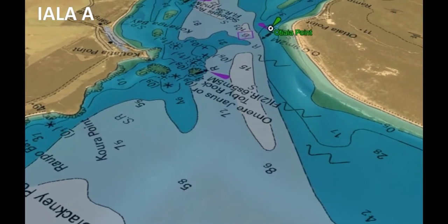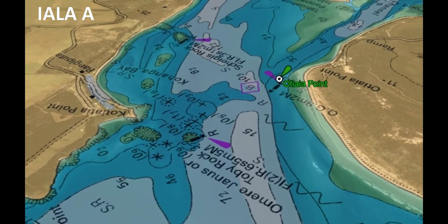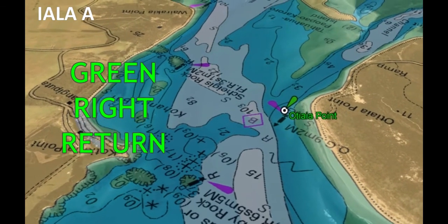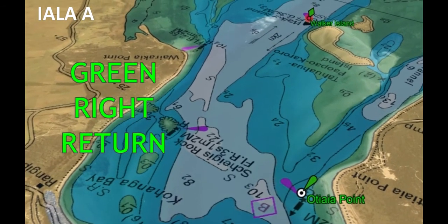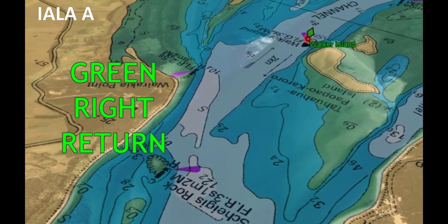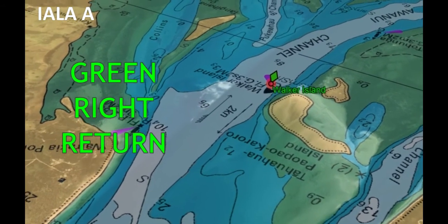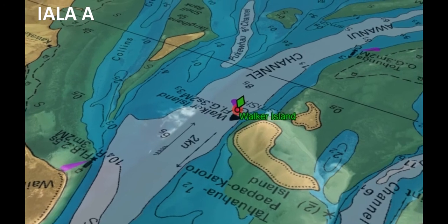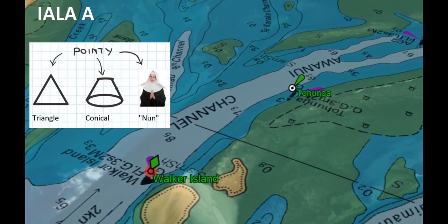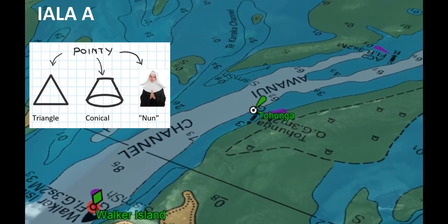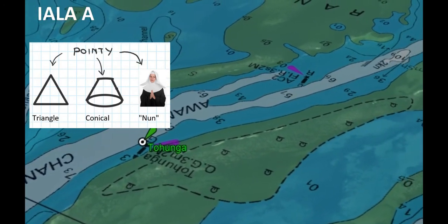Looking at the inbound from seaward in System A: on the right side, we now have green lights and buoys. Notice that in this case we're marking a more extreme right edge where we run into land, islands, or shallows instead of a linear channel. Right-hand shapes haven't changed — they're still pointy, conical, triangular. The nuns are still on the right side.